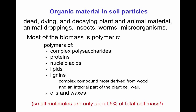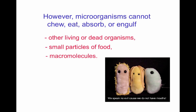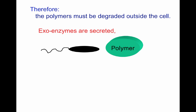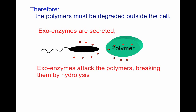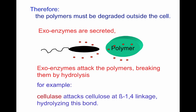Small micromolecules are only about 5% of total cell mass; most carbon is found in polymeric molecules. Since microorganisms cannot chew, eat, absorb, or engulf, they must consume materials from living or dead organisms by other means. What microbes do is release exoenzymes secreted into the environment. Those exoenzymes attack polymers and break them into monomers through a process of hydrolysis. For example, the enzyme cellulase attacks cellulose and breaks the beta-1,4 linkage present in cellulose by hydrolyzing that bond.